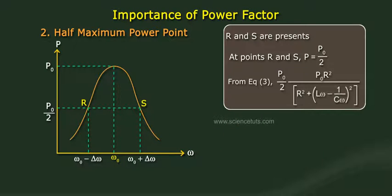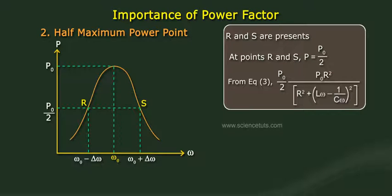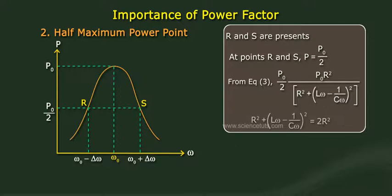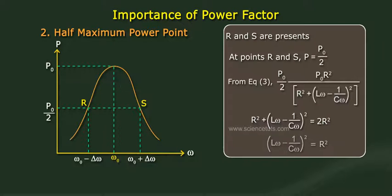From Equation 3, at points R and S: P₀/2 equals P₀ × R² divided by [R² + (Lω − 1/Cω)²]. Solving, R² + (Lω − 1/Cω)² equals 2R², so (Lω − 1/Cω)² equals ±R, giving Lω − 1/Cω equals ±R.